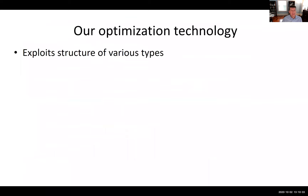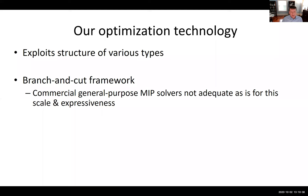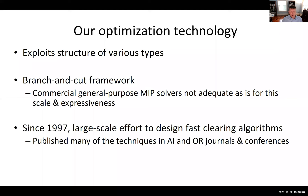The optimization technology exploits structure of various types. It's based on a branch-and-cut framework. We used commercial general-purpose MIP solvers, but they weren't adequate as-is for this problem and expressiveness. So we developed a host of additional techniques on top of those frameworks to make them scalable and robust. We actually published many of these techniques in AI and OR journals and conferences — we didn't keep them all trade secret.